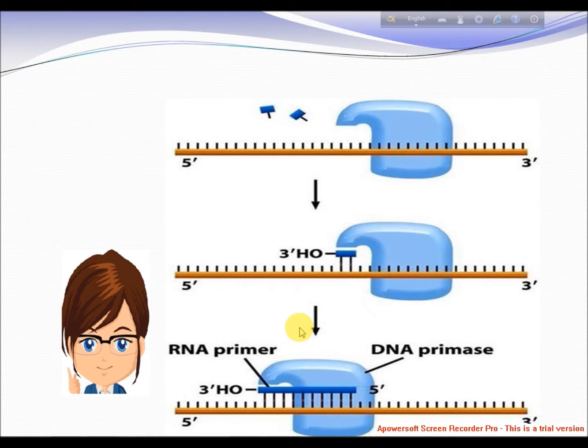The toprim fold is used for binding regulators and metals. The primase uses a phosphotransfer domain for the transfer coordination of metals, which makes it distinct from other polymerases.